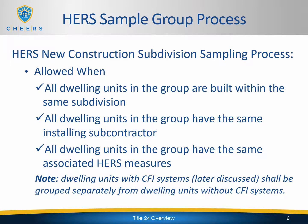CFI systems — central fan integrated ventilation systems — are considered a HERS measure. Even though it's not a credit or a HERS test, because they oftentimes only appear on some of the homes within a subdivision, the Energy Commission decided to treat it as a HERS measure. So if a dwelling unit does have a CFI system, that will be considered a unique HERS measure and will have to be accounted for when doing your sample grouping.